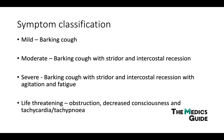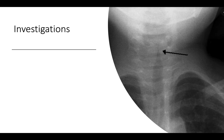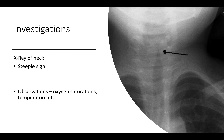When we see patients like this, we often do an x-ray of the neck, where we can see the narrowing of the airway — indicated by the black arrow — and this is called the steeple sign. We'll also do observations looking at oxygen saturations and temperature. An arterial blood gas is important as well, since with tachypnea it can lead to high carbon dioxide levels and respiratory failure. These investigations are more for the severe category of patients.